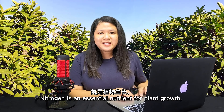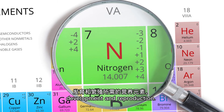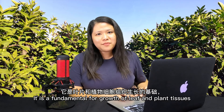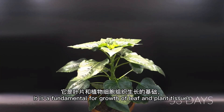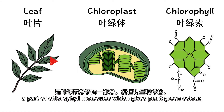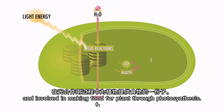Nitrogen is an essential nutrient for plant growth, development, and reproduction. It is fundamental for leaf growth and plant tissue, and is part of the chlorophyll molecule which gives the plant its green color. Nitrogen is also involved in the making of food through photosynthesis.